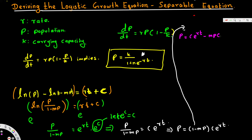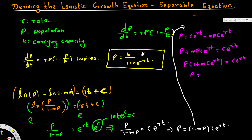Expanding: p equals C·e^(rt) minus mp·C·e^(rt). Moving the mp·C·e^(rt) term to the left: p plus mp·C·e^(rt) equals C·e^(rt). Taking p common on the left: p·(1 plus m·C·e^(rt)) equals C·e^(rt). Therefore p equals C·e^(rt) divided by (1 plus m·C·e^(rt)).